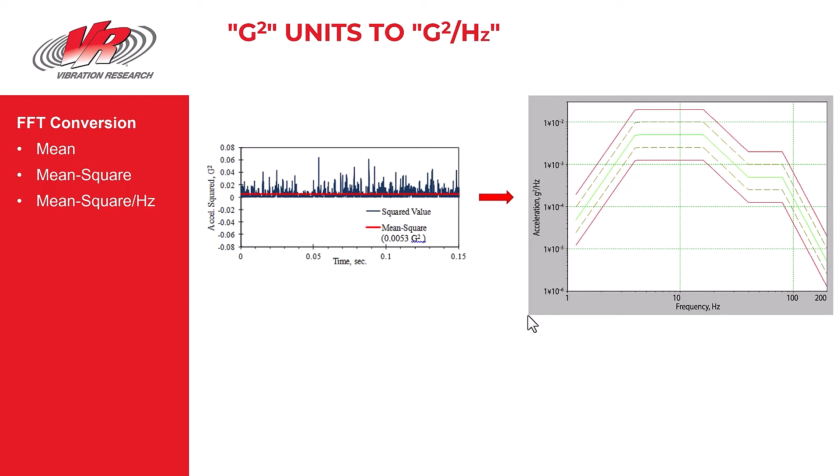But now these mean squared values are divided by the bandwidth of analysis measured in Hertz to display the average energy of the signal at each frequency. Thus we have a PSD, a power spectral density plot.